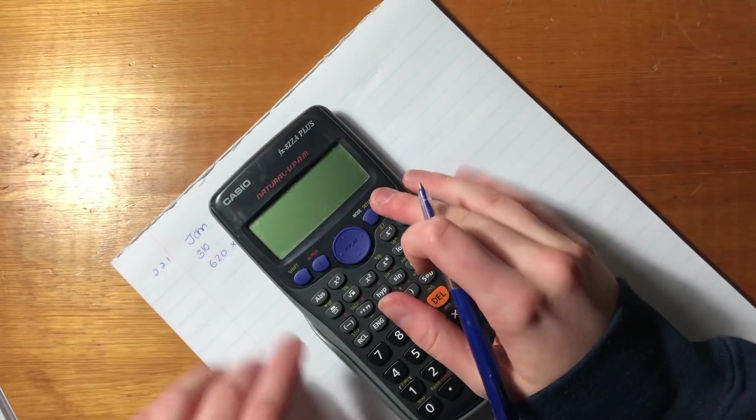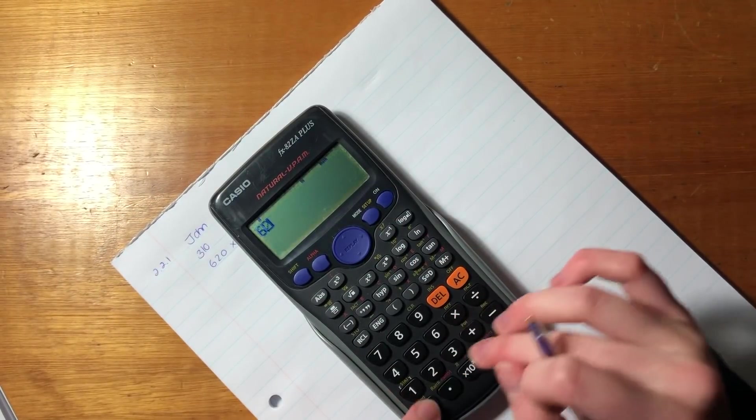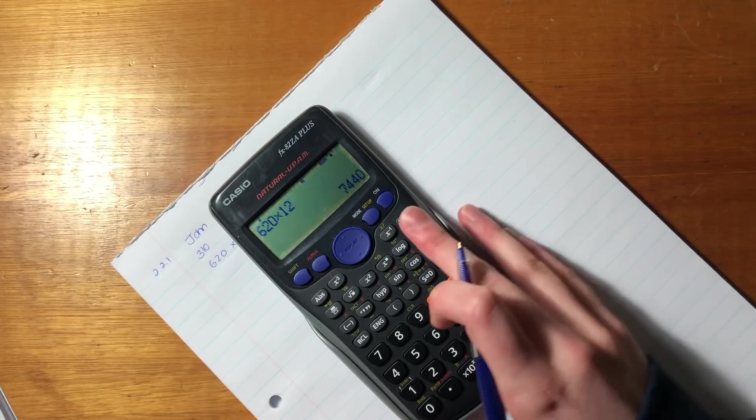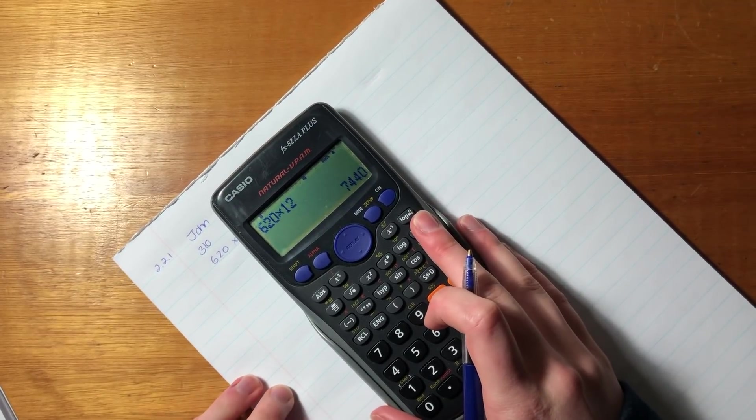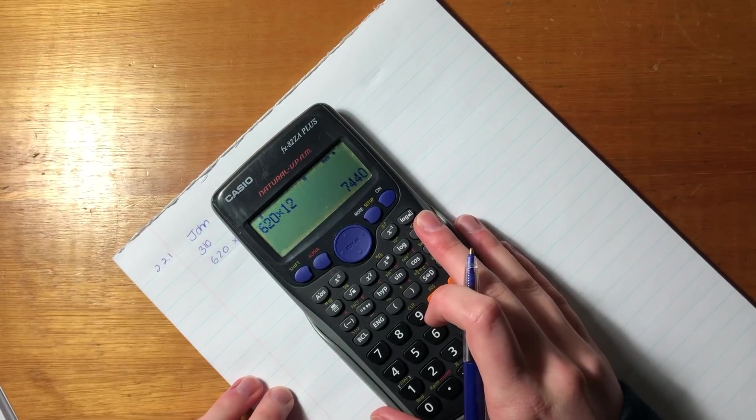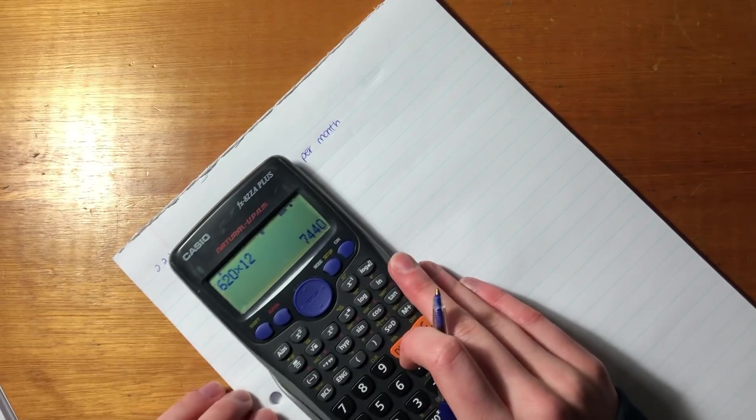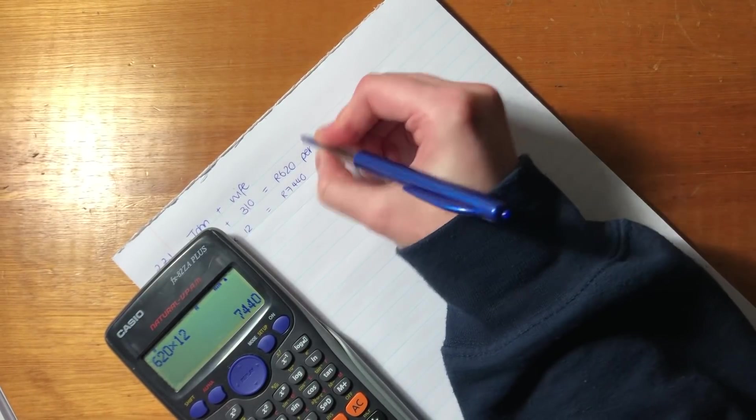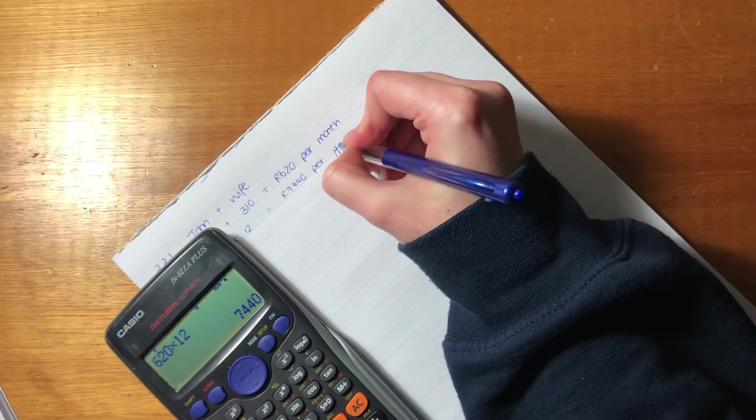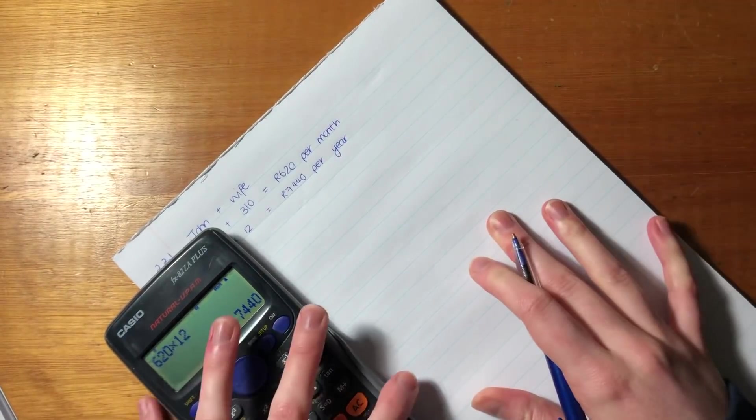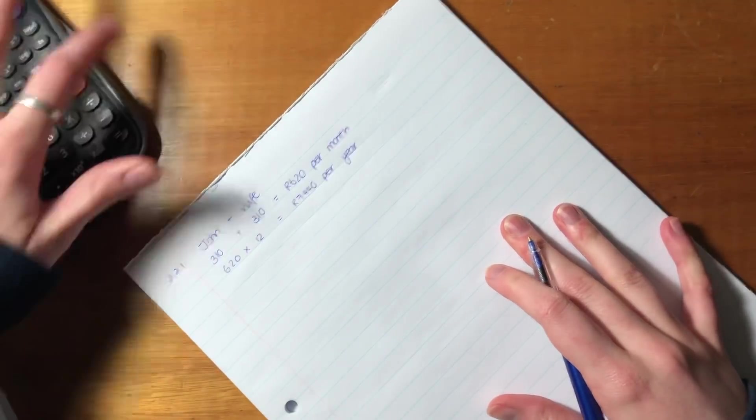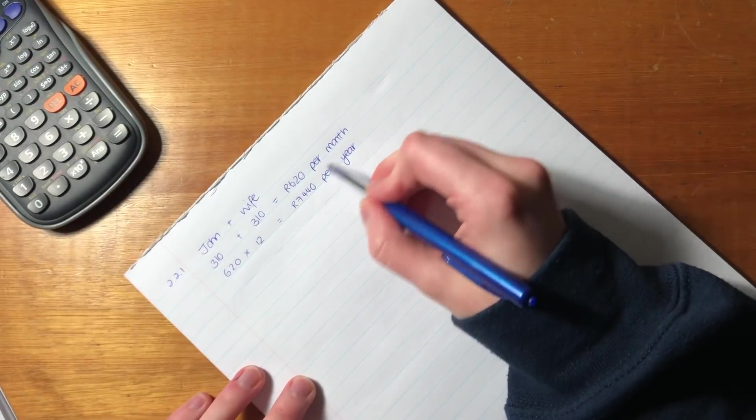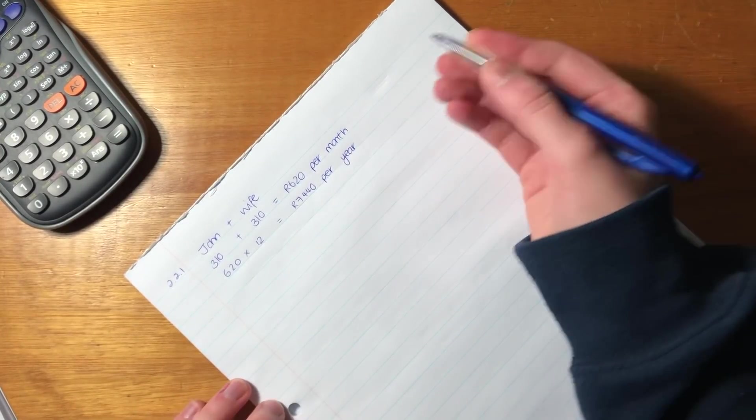Okay. So we're going to say 620 times 12. Why is it 12? 12 months in a year. Okay. So let's just do that calculation over here. So we say 620 times 12. So the rebate that John is going to get for contributing towards the medical scheme for himself and his lovely wife is 7,440 rand per year or for this year. You don't have to say per year. You could say for this year, whatever. You just have to indicate that this is the annual amount and that is the monthly amount.